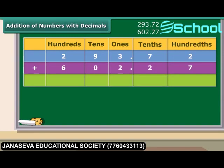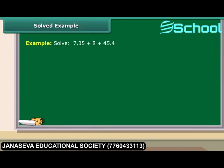Place the digits according to their place value in the table. Add the numbers as done for ordinary addition and place the decimal point before two digits from the right-hand side. Now let us try to solve 7.35 plus 8 plus 45.4.